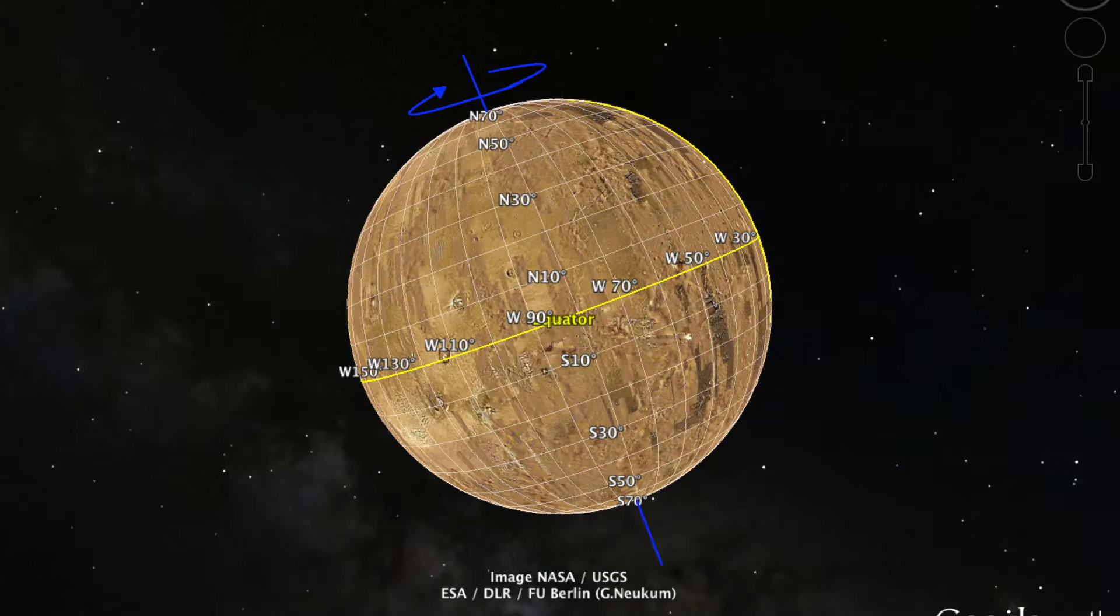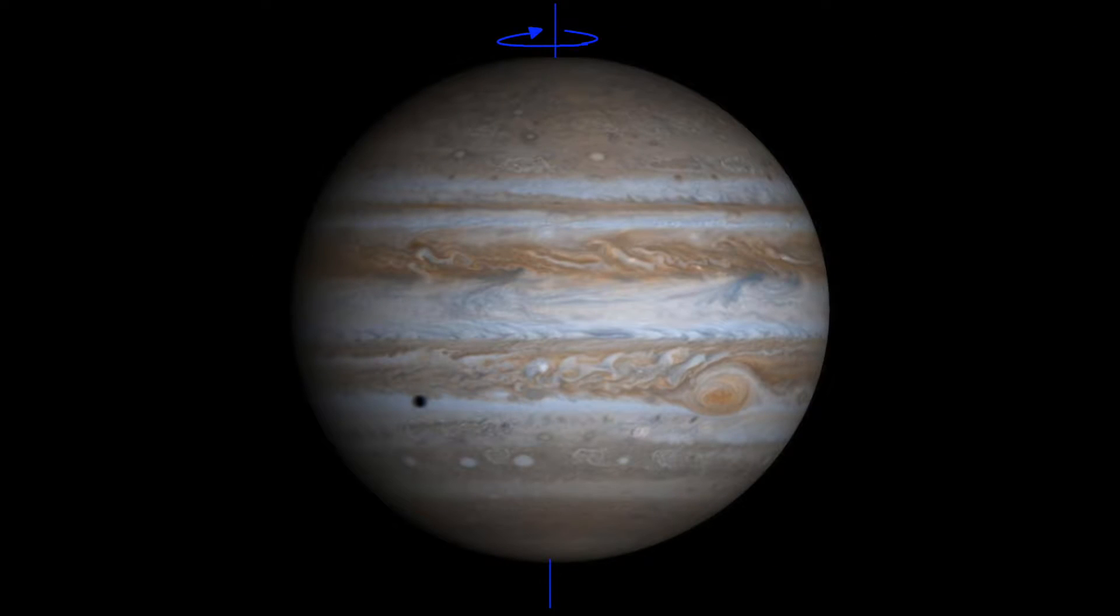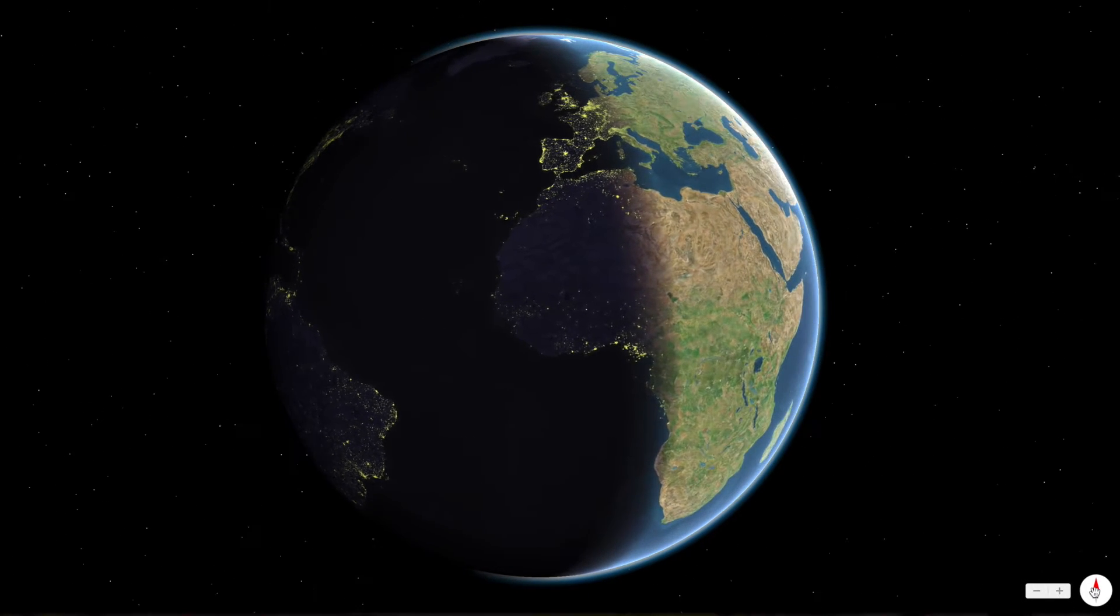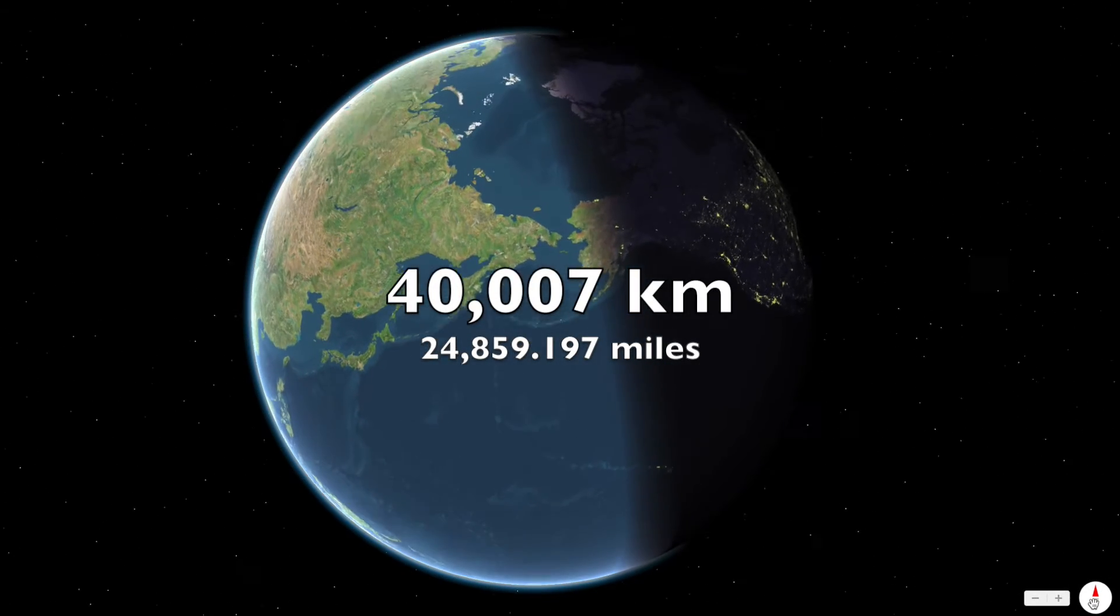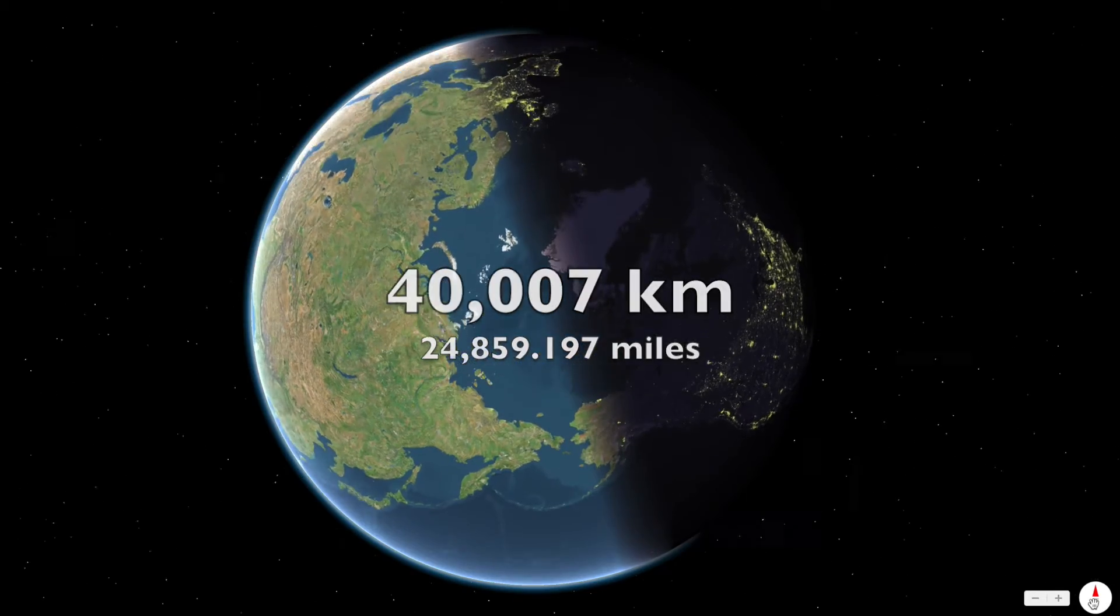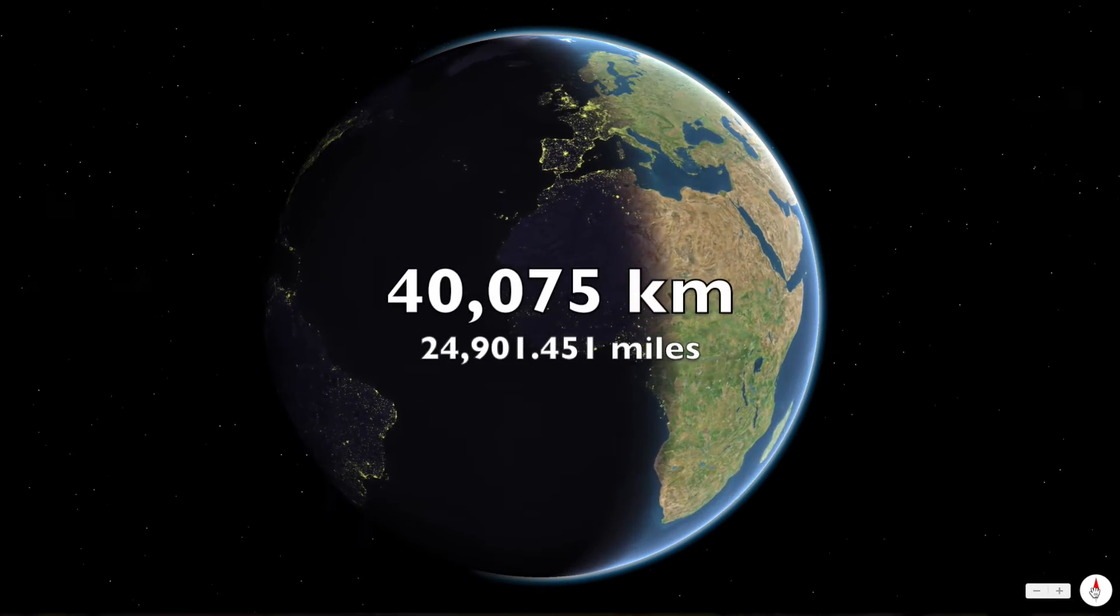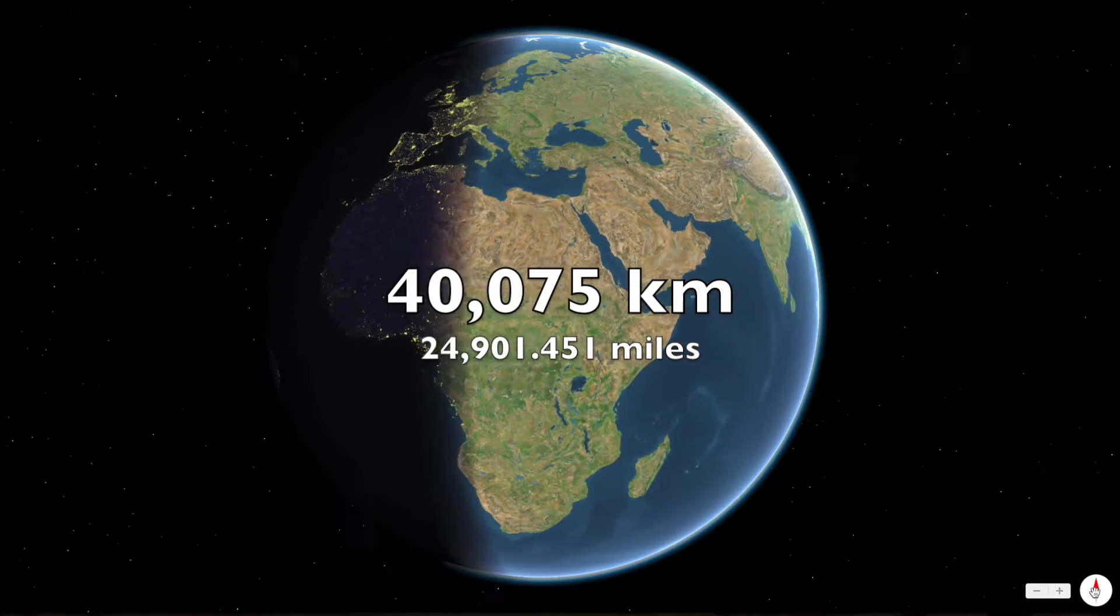This goes for Earth, Mars, Jupiter, and every celestial body out there. But let's say you had the foolish idea of wanting to follow the equator around the world. Instead of traveling the 40,007 kilometers that you would traveling once around the world passing through both poles, you would actually be traveling 40,075 kilometers. It holds 68 kilometers more.